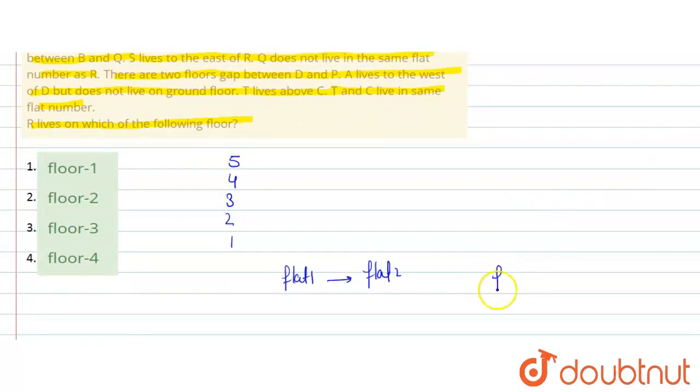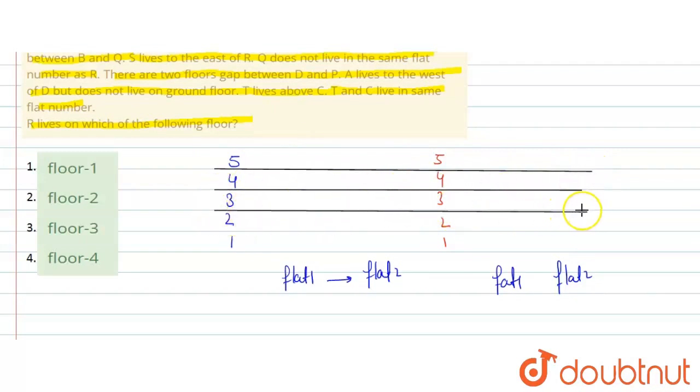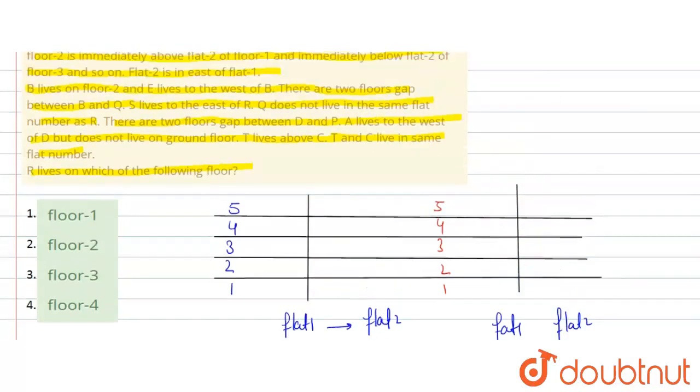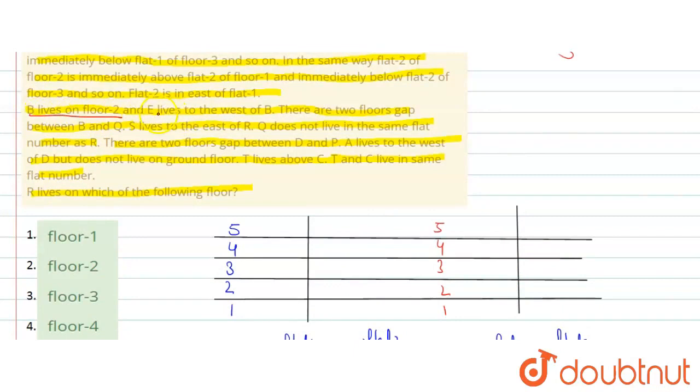So, we will take two conditions here. Here also we have flat 1 and flat 2. So, let's take numbering here also. So, here also numbering will be 5, 4, 3, 2 and 1. So, let's mark it here. This condition is getting created here. So, on each floor there are 2 flats - flat 1 flats and flat 2 flats. So, here we have flat 1, flat 2. In the same way flat 1 and flat 2. So, the condition given for B is that B is on second floor.